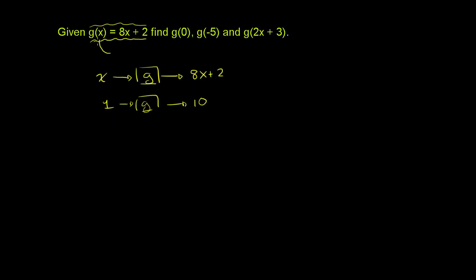But this is one of the most typical ways that you'll see a function defined. It says: input an x over here, and I'm going to output 8x plus 2. So with that out of the way, let's think about what g of 0 is.